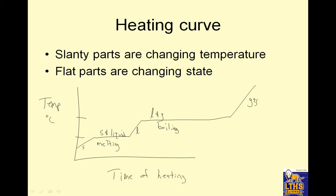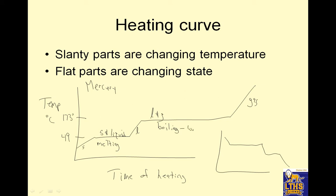When a substance boils, notice its temperature is not changing. So let's say this is 173 and this is 49 — we'll say this is mercury or something. Yes, you can make a metal turn into a gas. I also want to point out that boiling is longer and melting is shorter, because it takes more energy for the change from liquid to gas, and less energy to go from solid to liquid.